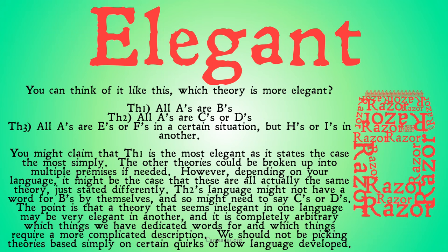However, depending on your language, it might be the case that these are all actually the same theory, just stated slightly differently, because of the limitations of the language. Theory 2's language might not have a word for B's by themselves — we might need to say C's or D's — but this isn't an artifact of natural kinds out in the world, but rather simply an artifact of the language. The point is that a theory that seems inelegant in one language may be very elegant in another, and it's completely arbitrary which things we've dedicated words for and which things require a more complicated description. We should not be picking theories based simply on certain quirks of how language developed.